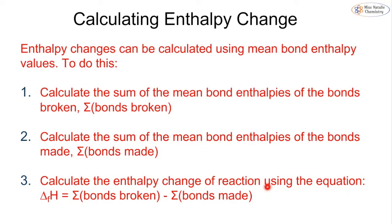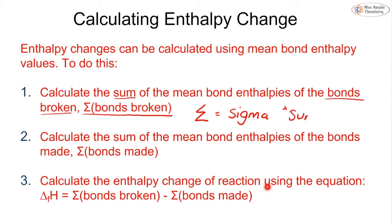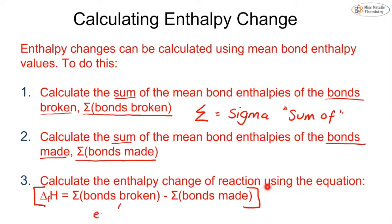Enthalpy changes can be calculated using mean bond enthalpies by doing three things. First, calculate the sum (Σ) of the bond enthalpies of all bonds broken. Second, calculate the sum of the bond enthalpies of all bonds made. Third, use the equation: ΔH = Σ(bonds broken) − Σ(bonds made). Remember: breaking bonds is endothermic (energy input required), and making bonds is exothermic.